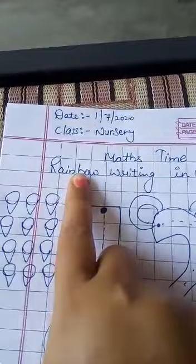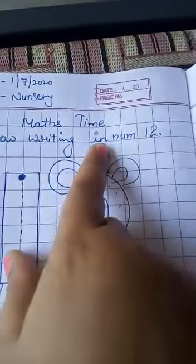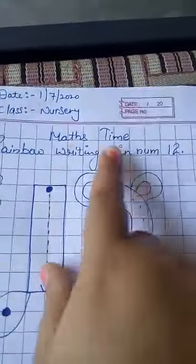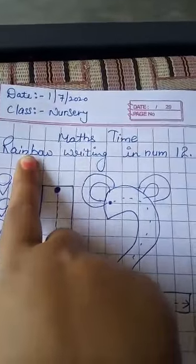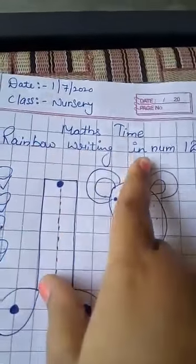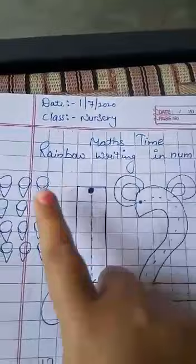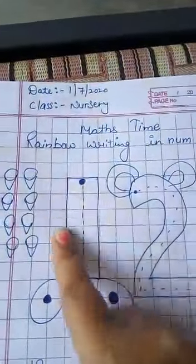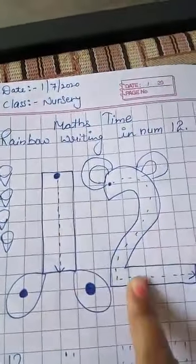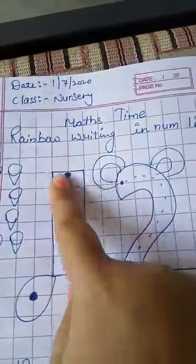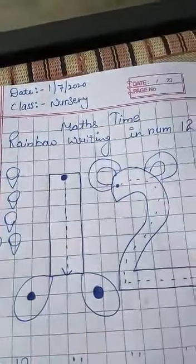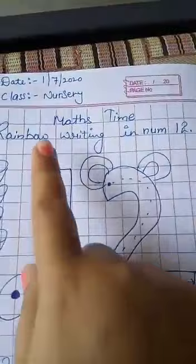Today our topic is rainbow writing in number 12. Speak all of you. Rainbow writing in number 12. Now see, here is number 12. Which number is here? Number 12.